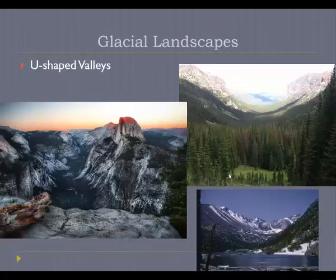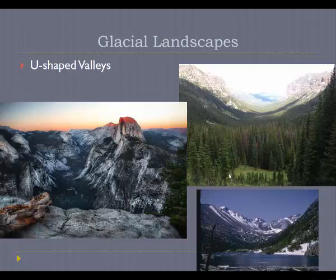Over time, glaciers erode big U-shaped channels. These often start as V-shaped river valleys, but as the climate cools and glaciers move through those ancient V-shaped valleys, they reshape them into broad U-shapes. A famous example is Yosemite Valley — a glacially shaped U-shaped valley. In this case the glacier was powerful enough to scrape off part of a large granitic dome, leaving behind what we know as Half Dome — one side of that big U-shaped valley.